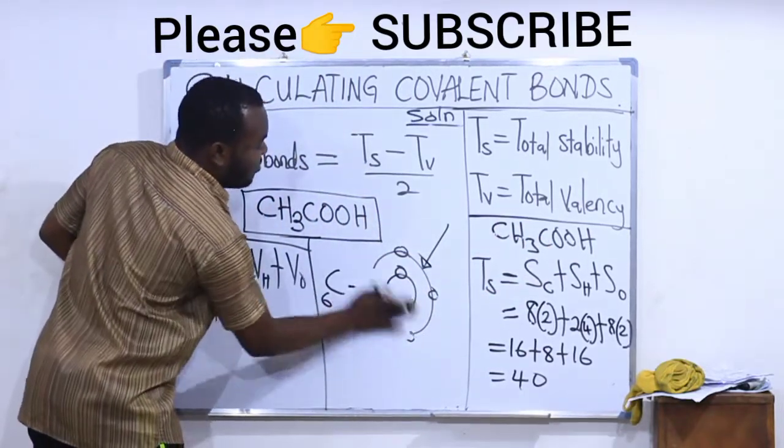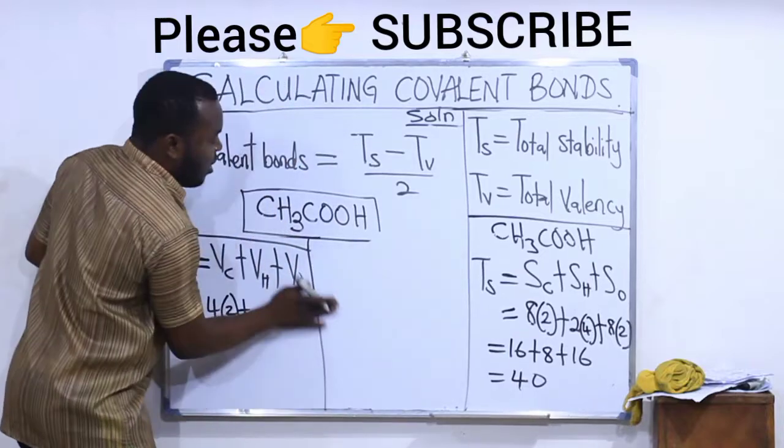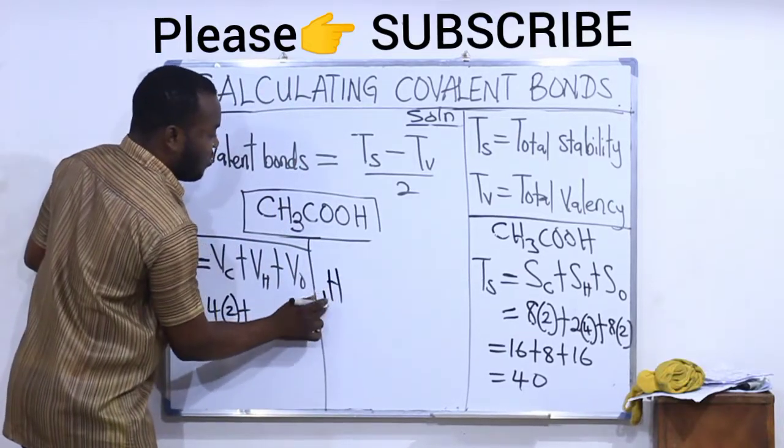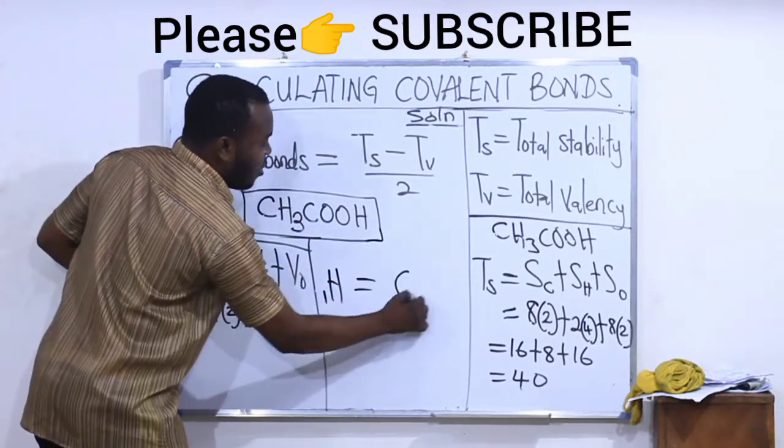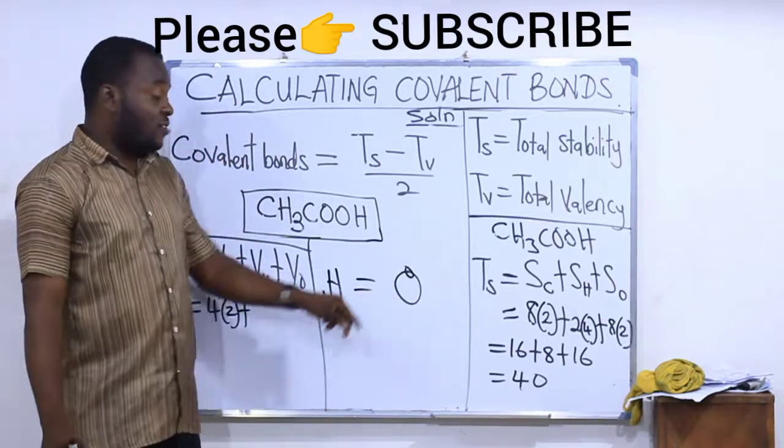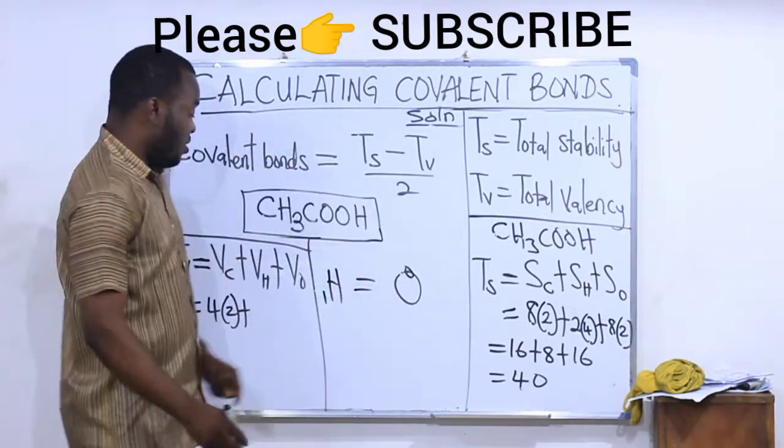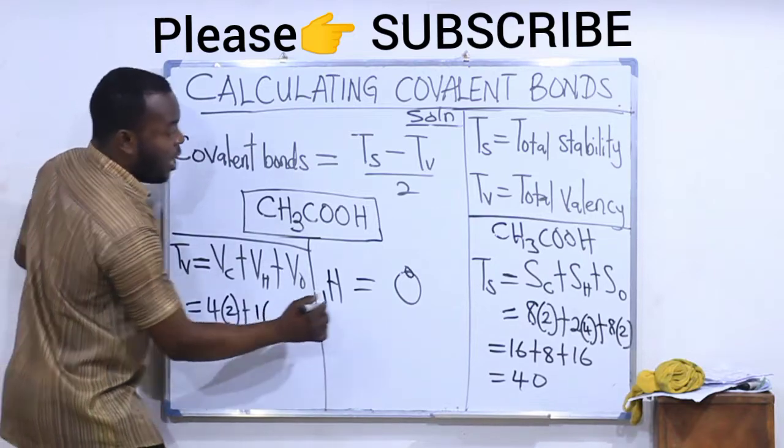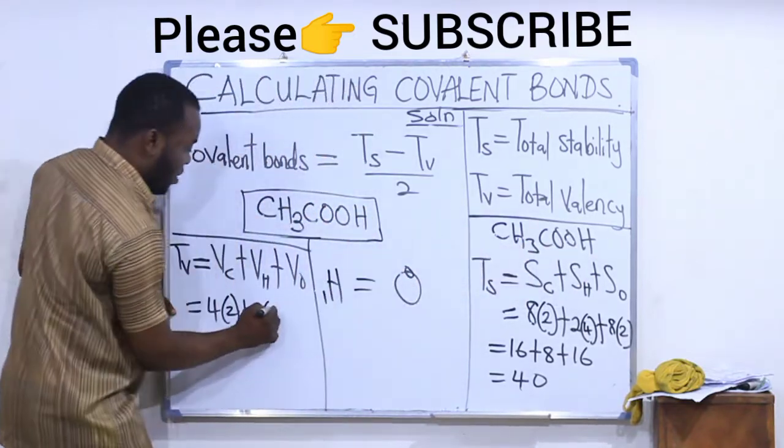Plus, valency for hydrogen. Hydrogen is the first element. If I draw it, I'll have it as this. The valency is only 1, one electron is in the valence shell. So I'll say 1 multiplied by how many hydrogens are in the compound? 4 of them.